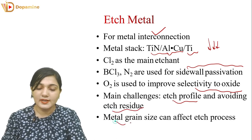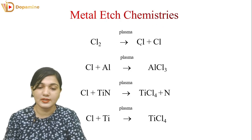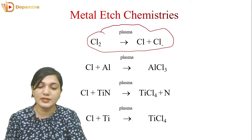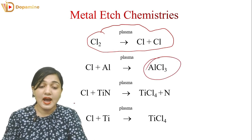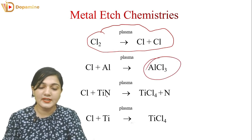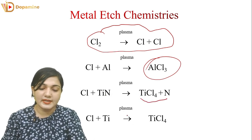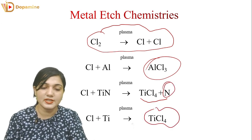The etching process can also be affected by metal grain size. In the metal etch chemistry, Cl2 comes into contact with plasma to create chlorine free radicals. These react with aluminum to create AlCl3, with titanium nitride to create TiCl4, and nitrogen free radicals are also generated.